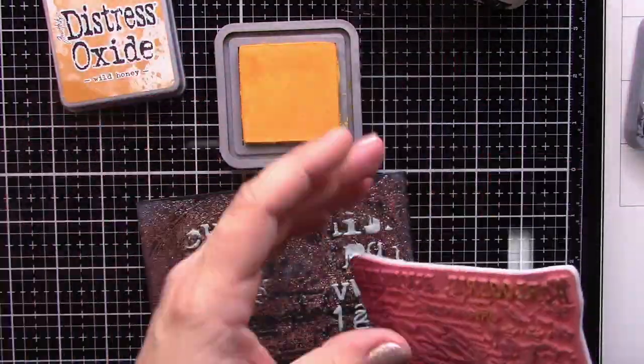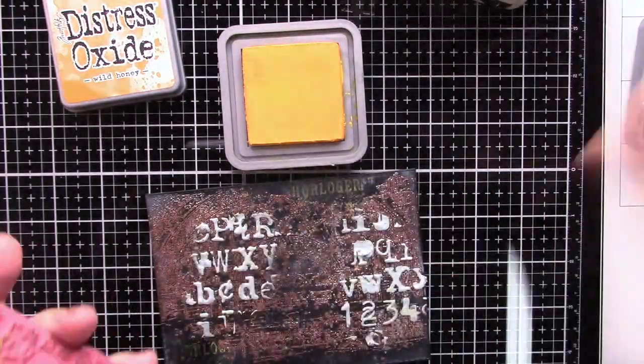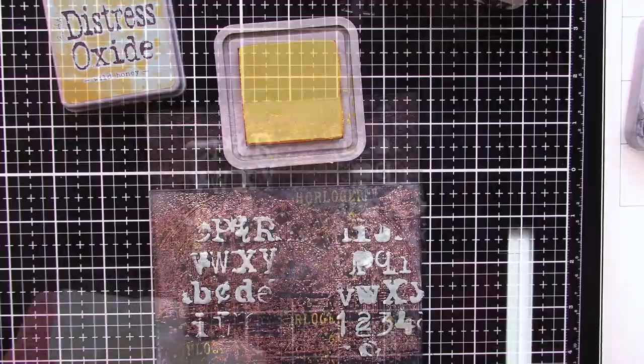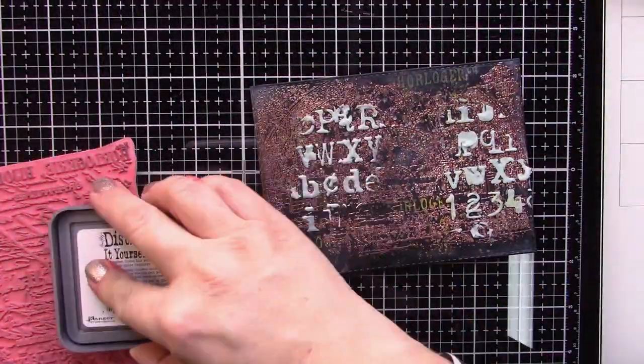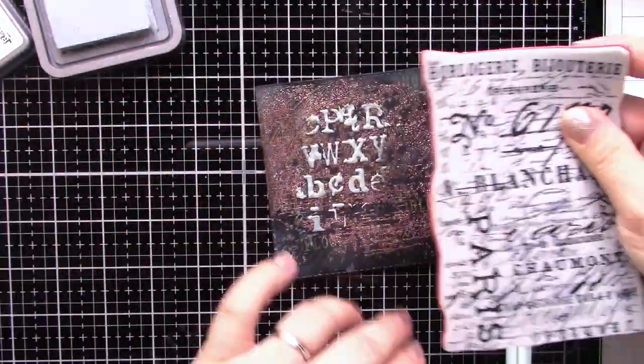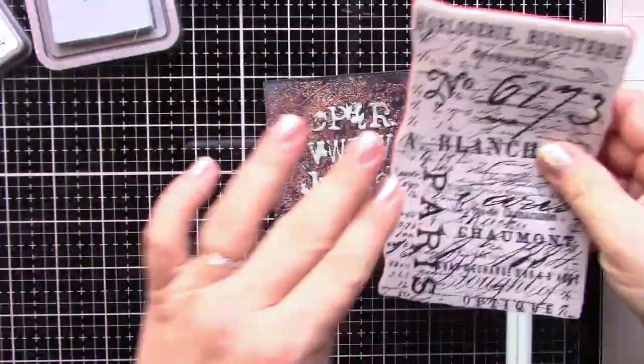Here's some background stamping. I will do no more heat embossing the background. I will just stamp here and there. I'm cleaning the stamp in between because there is that black soot and it's transferring to my stamp and I don't want to make my stamping pad dirty.